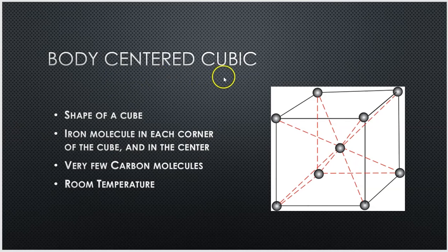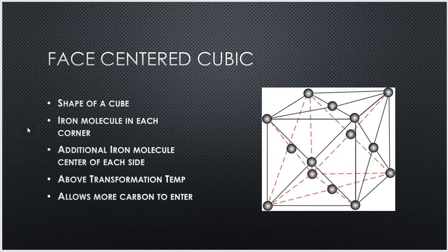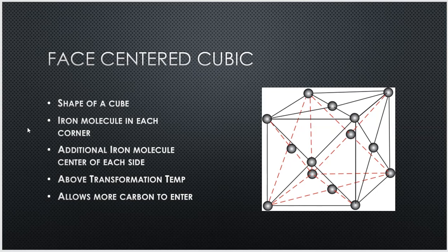An easy way to remember body-centered cubic is that it occurs at room temperature. When you start heating steel up and it reaches its transitional temperature, that microstructure is going to start to open up and expand. Instead of having one iron molecule at each corner, we're now adding even more iron molecules because the iron is expanding within the grain structures. We still have one in each corner, but now we have an additional iron molecule at the center of each side. With this expansion, there's also more room for carbon molecules to come in and find their way in between the iron molecules. Face-centered cubic is when the steel heats up to its transitional temperature and allows more carbon to enter these grain structures.